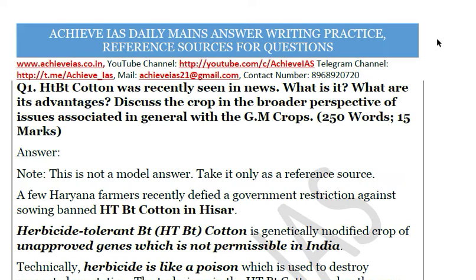Today's question is: HTBT cotton was recently seen in the news — what is it, what are its advantages, and discuss the broader perspective of issues associated in general with GM crops. The word limit is 250 and maximum marks are 15. Before starting, note that this is not a model answer — you can take it only as a reference source.